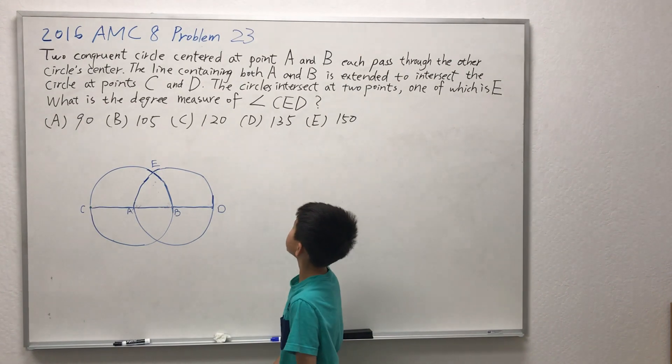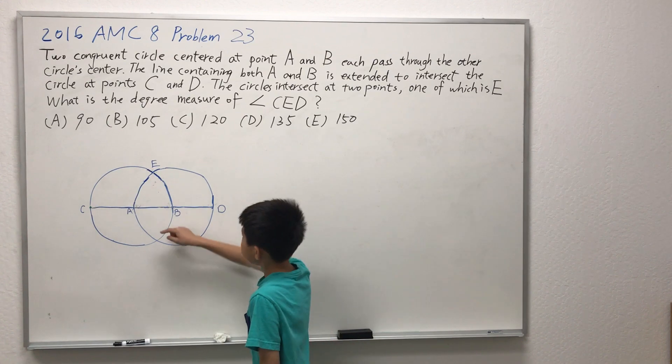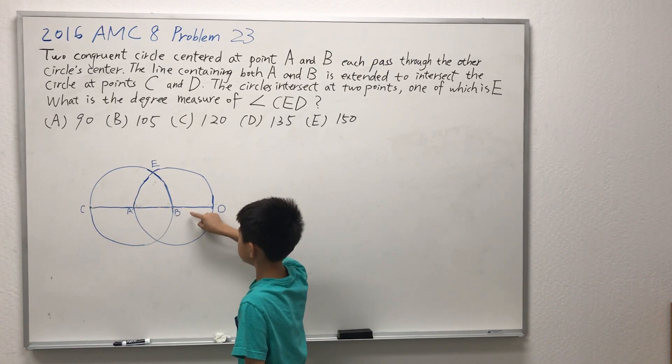Two congruent circles centered at point A and point B each pass through the other circle's center. In this case, circle B passes through circle A's center, and circle A passes through circle B's center.